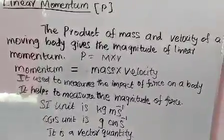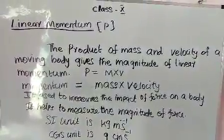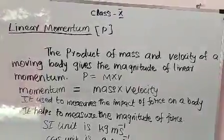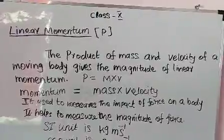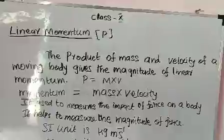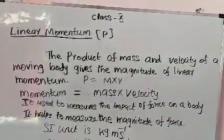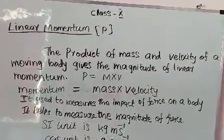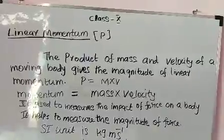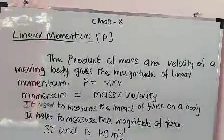Momentum is a vector quantity. From the equation P = M × V, the momentum of a moving body is directly proportional to mass. Mass increases, momentum also increases; mass decreases, momentum also decreases. Similarly, momentum P is directly proportional to velocity V. Speed of the body increases, momentum also increases; speed decreases, momentum also decreases.